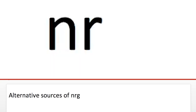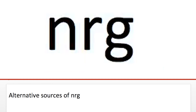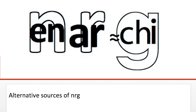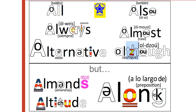An informal way that we write 'energy' is N-R-G. If you look at these letters it sounds like 'energy'. Be careful with the word ALTERNATIVE — this is written AL but it's pronounced AL.